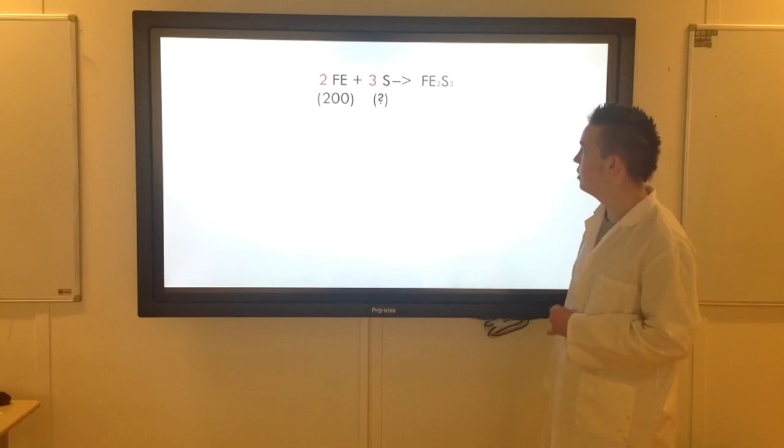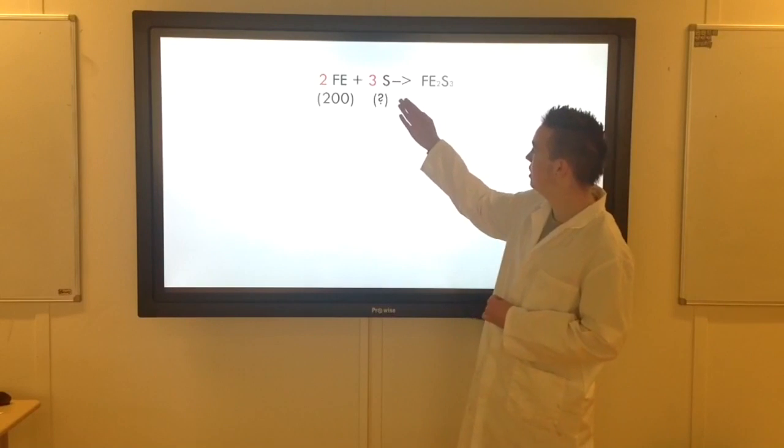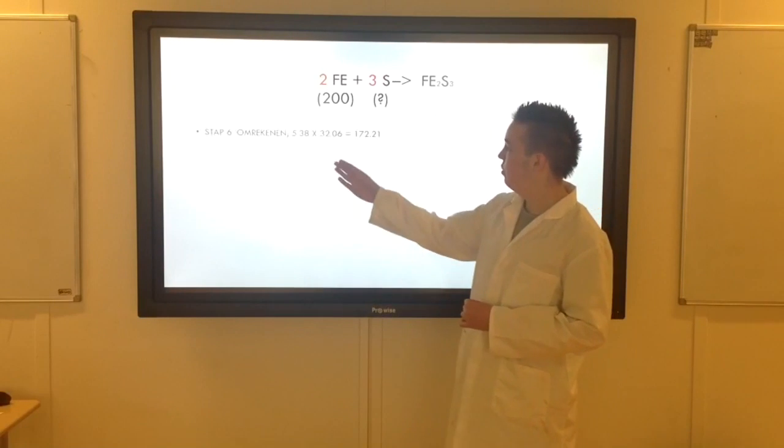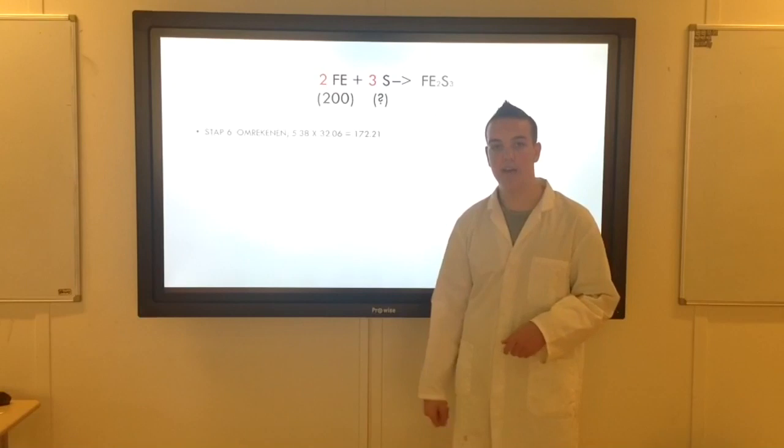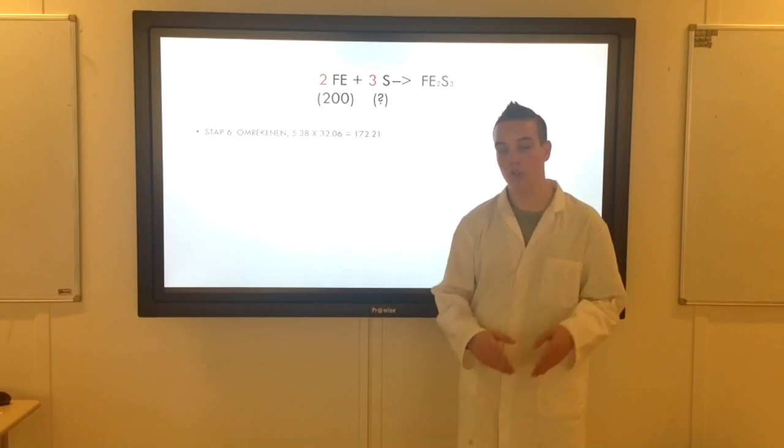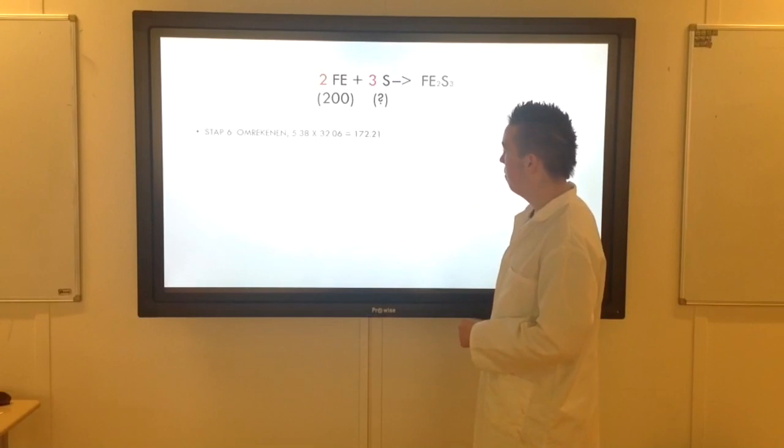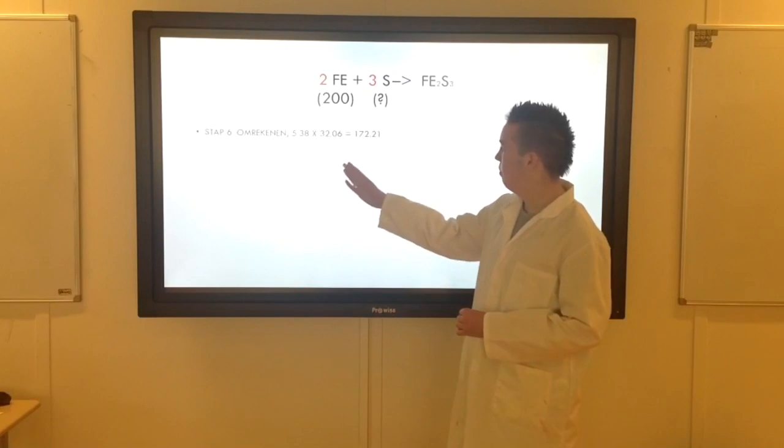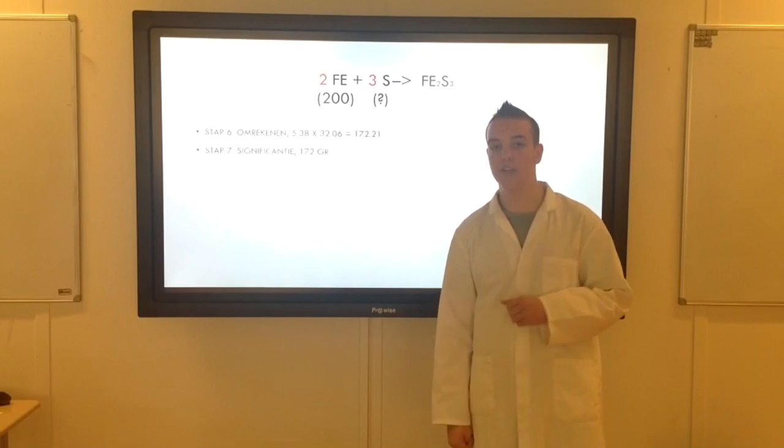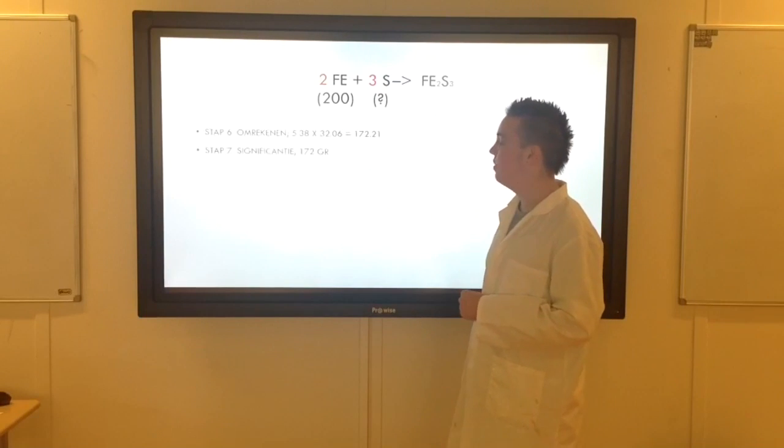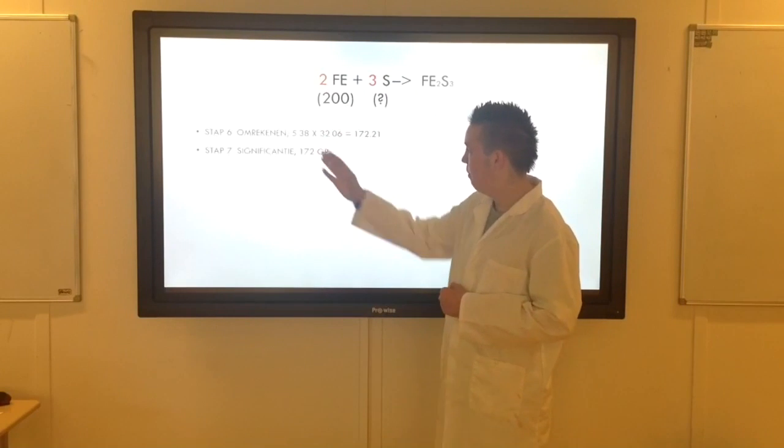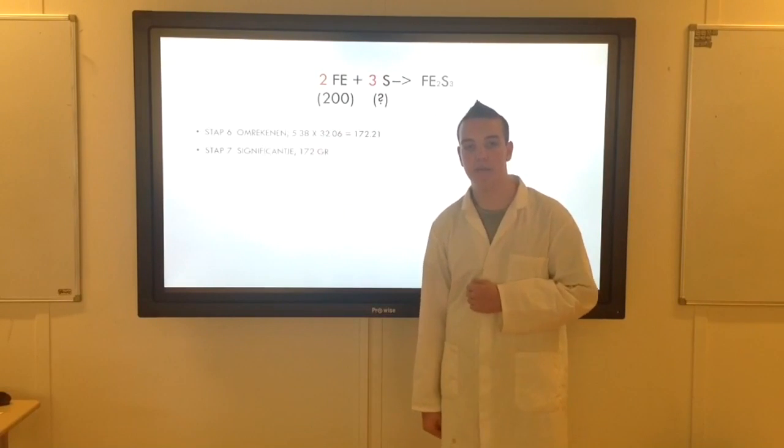Dan gaan we naar stap 6. Ik heb de formule weer boven neergezet zodat we het niet terug hoeven te spoelen. Nu doen we weer hetzelfde als bij de vorige keer. We gaan weer van mol terug naar massa. Dus dat doen we keer de molaire massa. Maar uiteraard doen we dat wel van de zwavel. Dus 5,38 keer 32,06 wordt 172,21 gram. Maar we moeten even kijken. Drie significanten. We hebben even netjes afgelopen naar 172 gram.